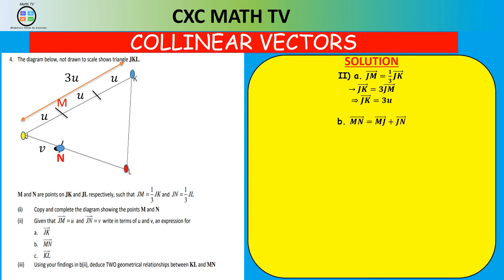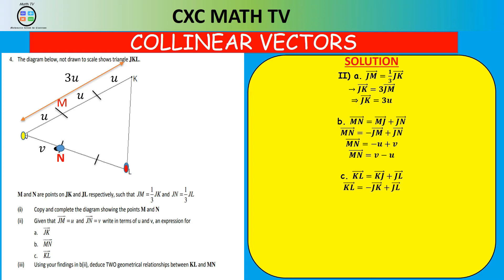Vector MN: going from M to J then J to N gives −JM + JN = −u + v = v − u. Vector KL: going from K to J then J to L gives −JK + JL = −3u + 3v = 3v − 3u.